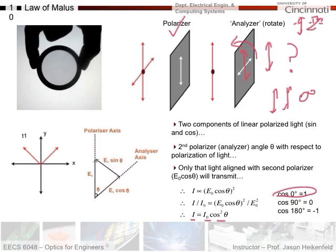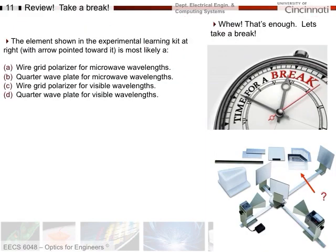At θ = 180°, cos(180°) = −1, but since it's cos²θ, you get (−1)² = 1, so again I = I₀ — the polarizers are effectively realigned. The Law of Malus predicts how much intensity gets through two polarizers as you rotate the second one relative to the first. At that point you can take a break and answer the practice question — remember that what applies to visible light applies to other wavelengths of electromagnetic radiation as well.